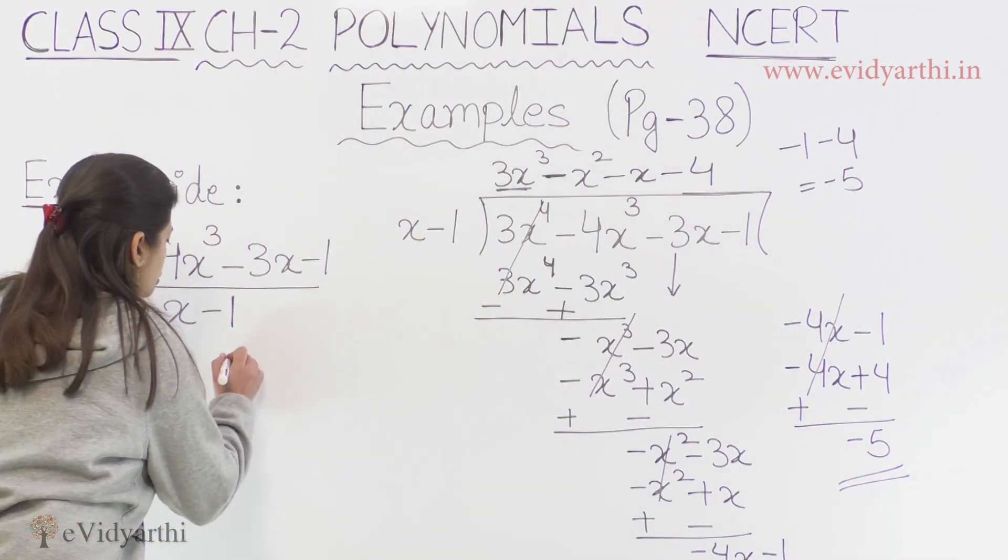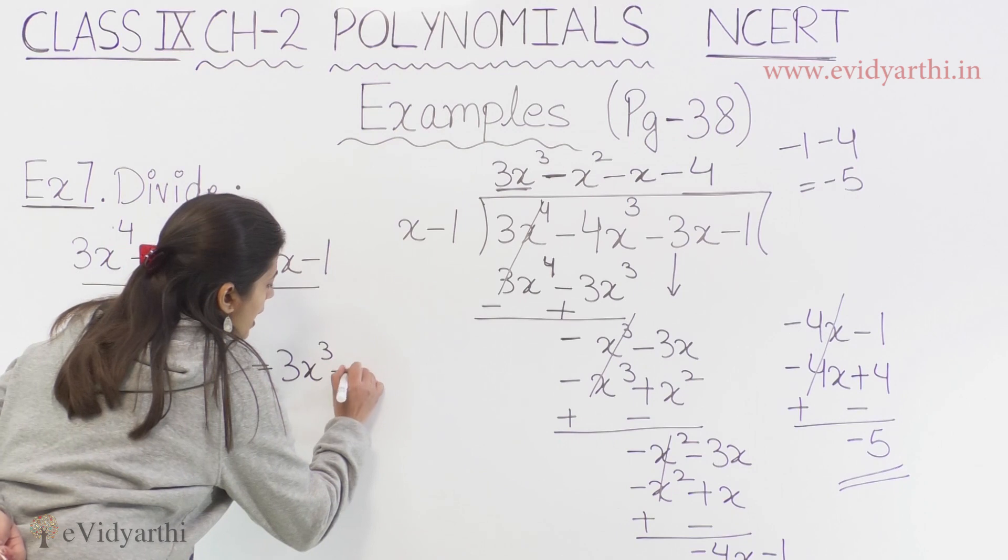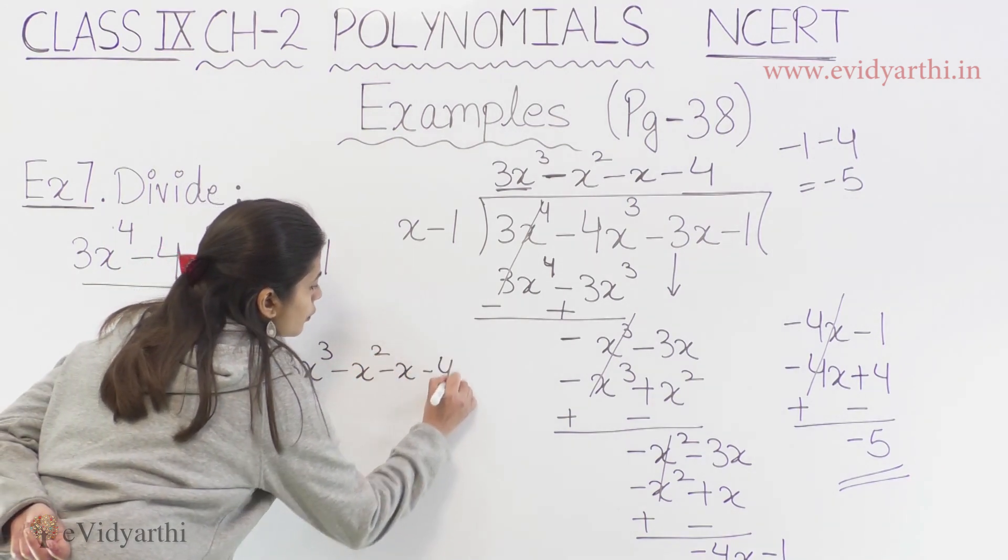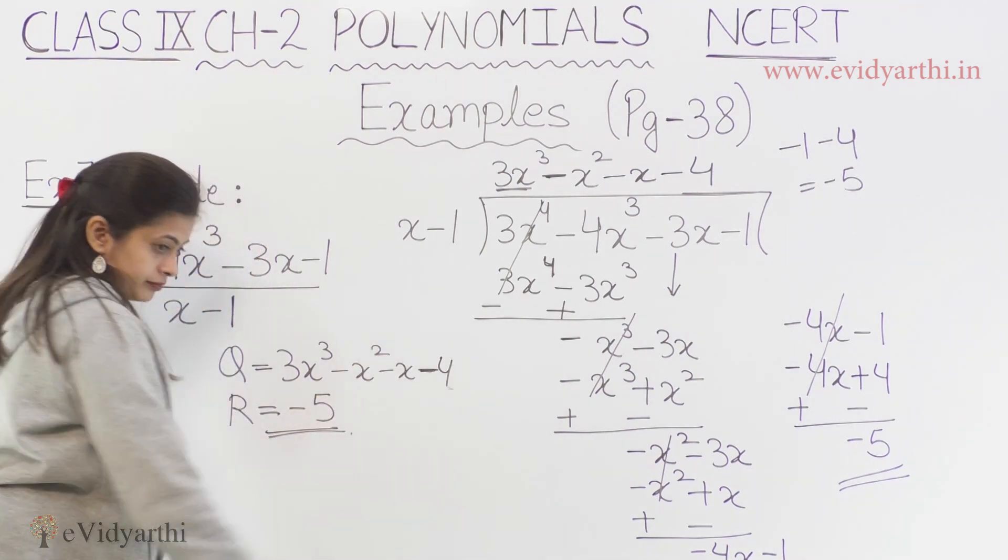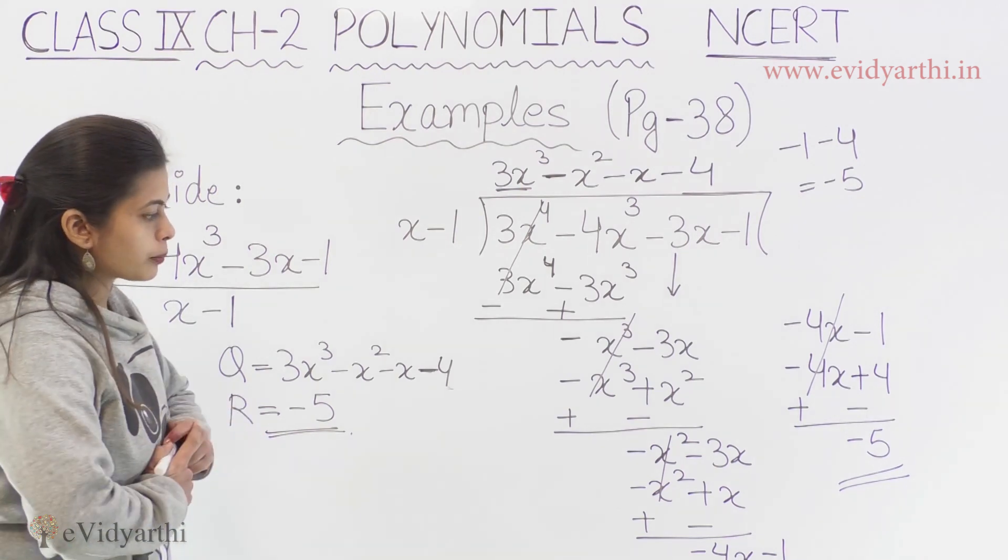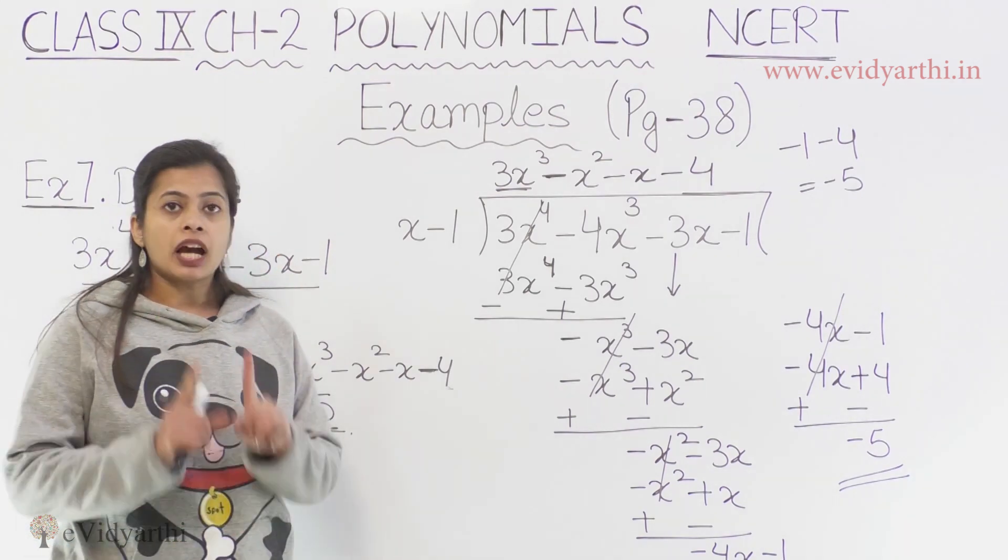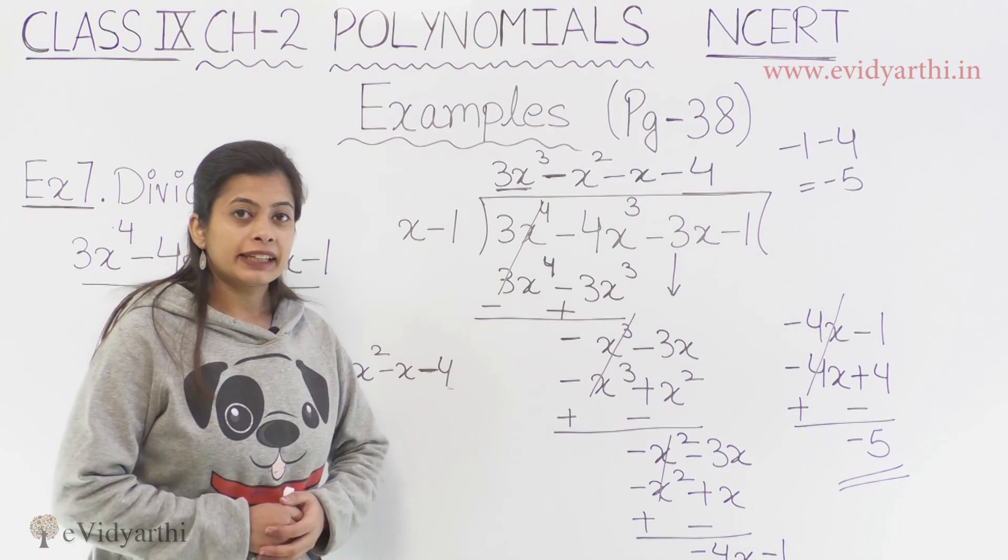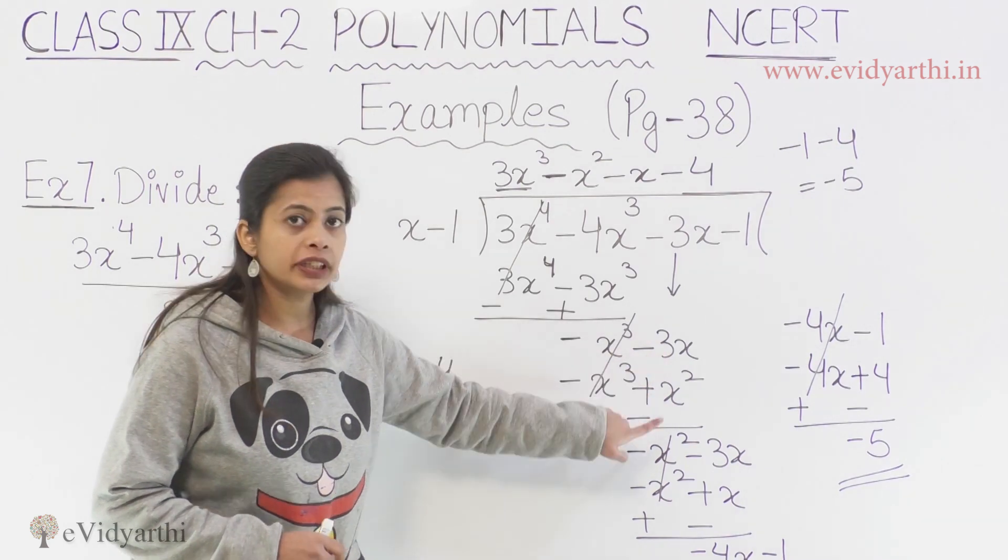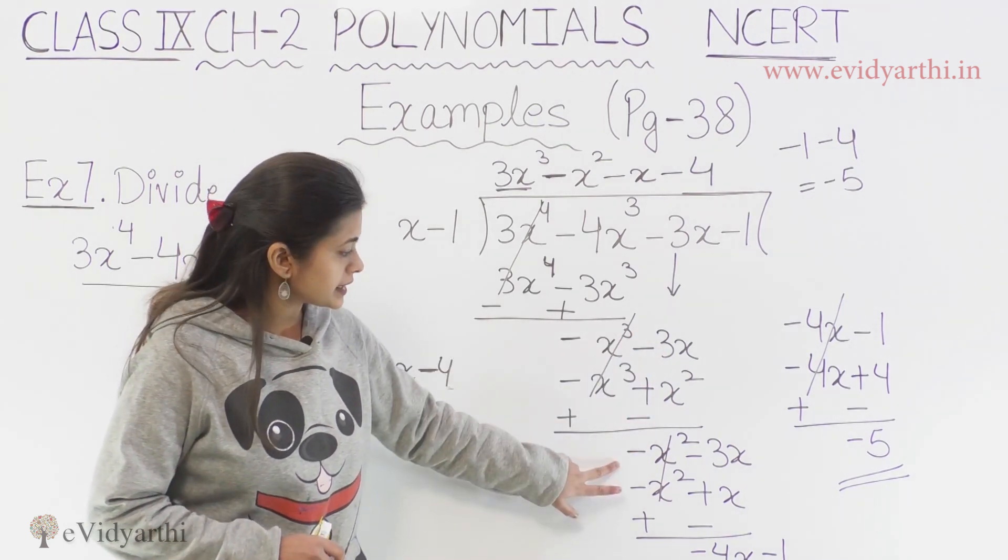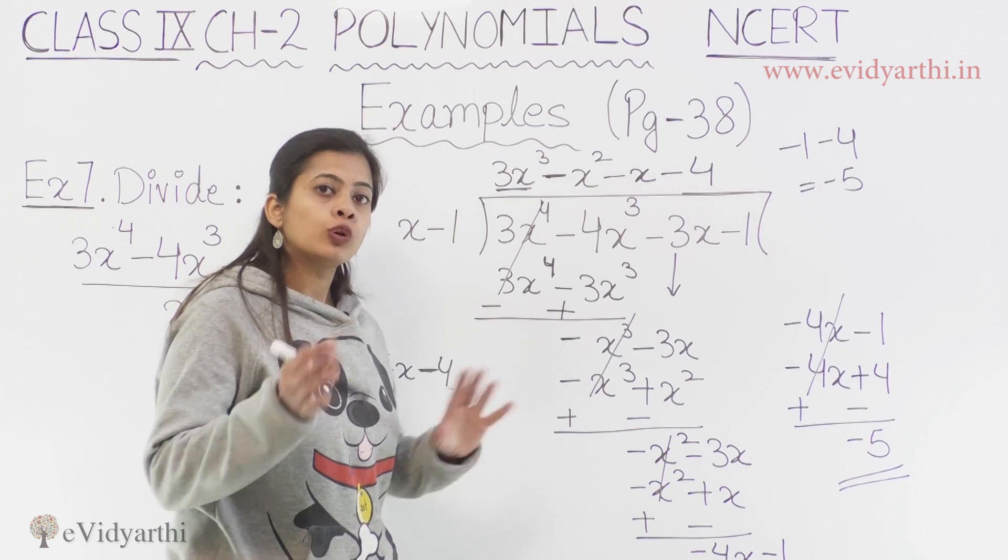So agar is portion mein humme apna answer batana hai ki humara quotient kitna aya hai. We have 3x^3 minus x^2 minus x minus 4 as the quotient and then what we have as the remainder? We have minus 5 as the remainder. So I hope aapko samaj aya ho kaise step by step humme apne quotient ko leke chalna hota hai. Plus yahan per ek point to be noted wali point kaunsi thi ki yahan per kis tariqe se humne dekha ki humare jo dono terms hain wo aapas mein operate nahi ho sakti, is wajah se humne kya kiya ki unho dono ko saath mein likh diya aur uske saath se humne apne divisor ke through usko operate kiya.